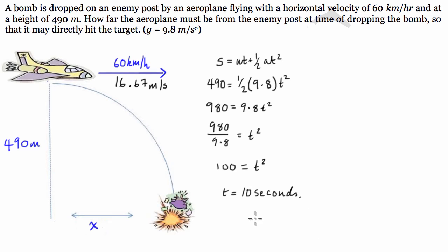So if we know the bomb is travelling 16.67 meters per second in the horizontal direction, and it's falling for 10 seconds, the bomb will cover—because distance equals velocity times time—which is 16.67 × 10, which equals 166.7 meters.